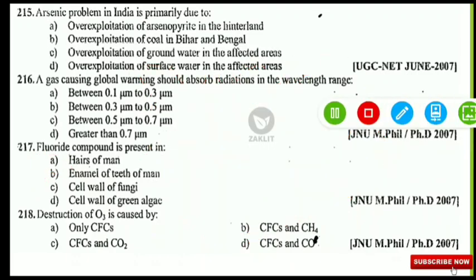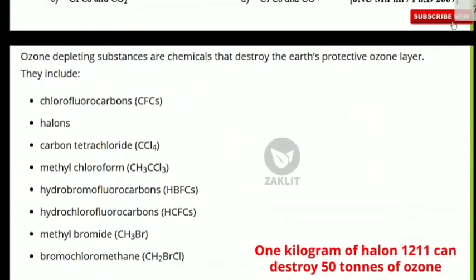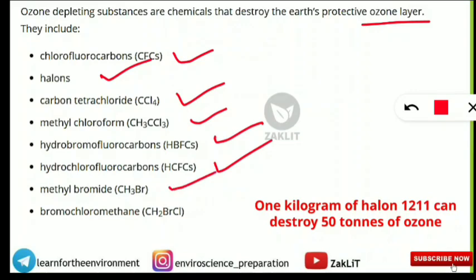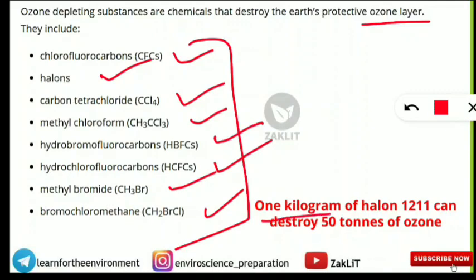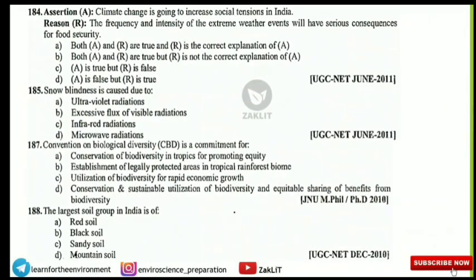The next question: destruction of ozone is caused by what? The correct option is only CFC. Methane, carbon monoxide, and carbon dioxide do not destroy ozone. Key ozone-depleting substances include: chlorofluorocarbons (CFCs), halons, carbon tetrachloride, methyl chloroform, hydrobromofluorocarbons, hydrochlorofluorocarbons, CH3Br (methyl bromide), and bromochloromethane. Note that 1 kilogram of halon 1211 can destroy 50 tons of ozone — halons are extremely devastating to the ozone layer.